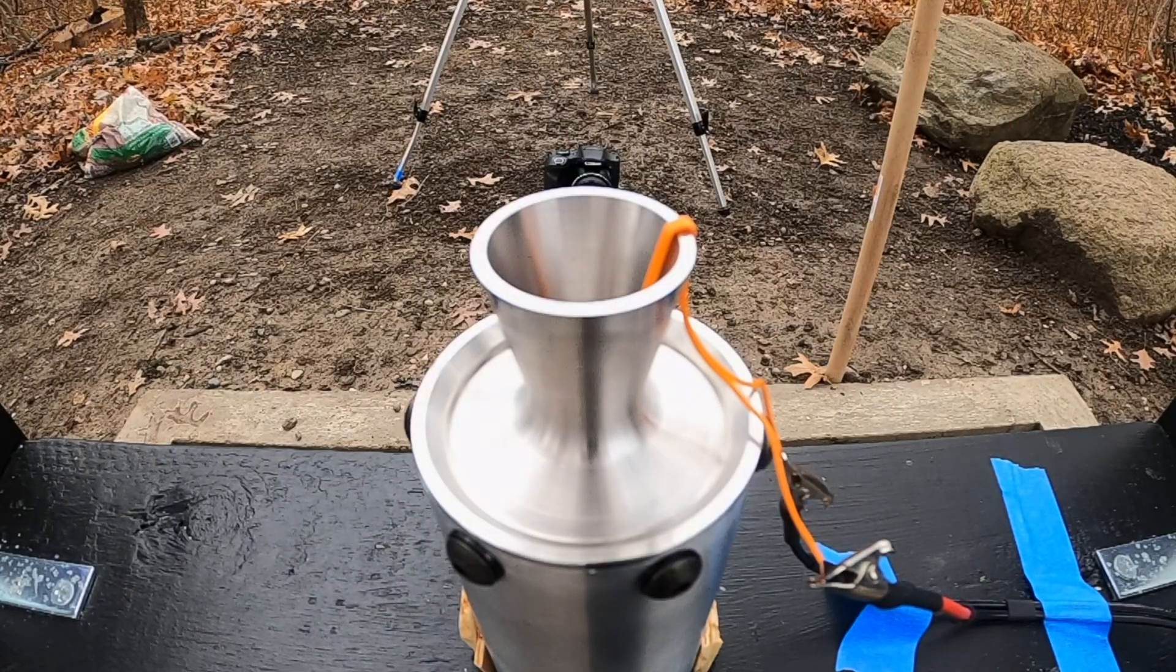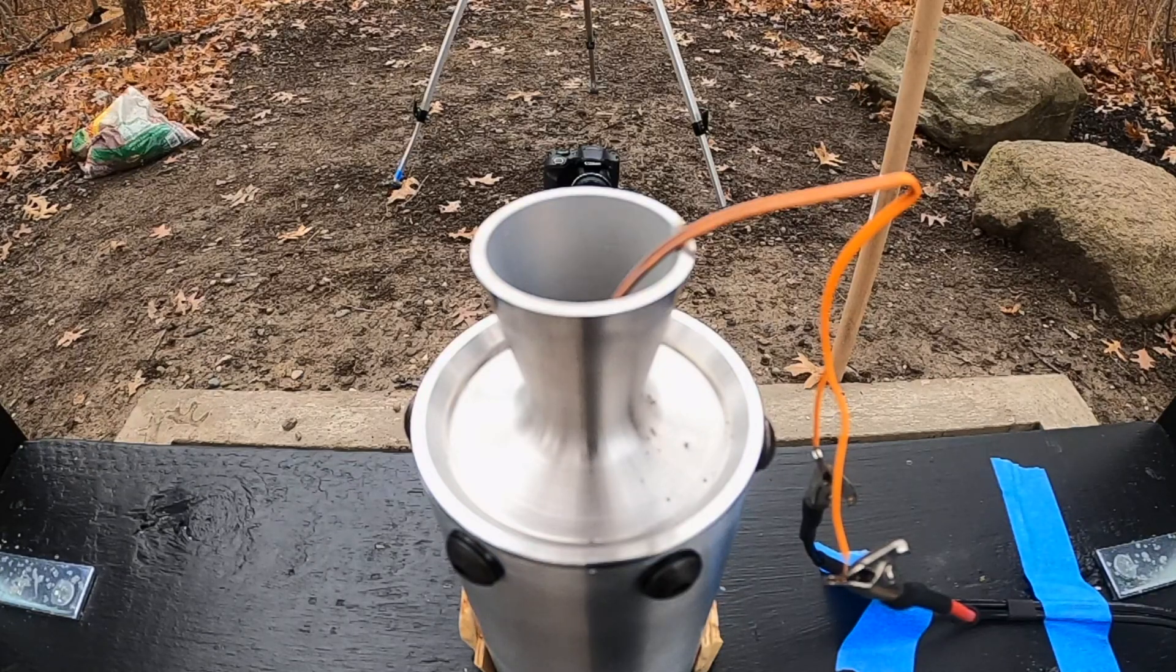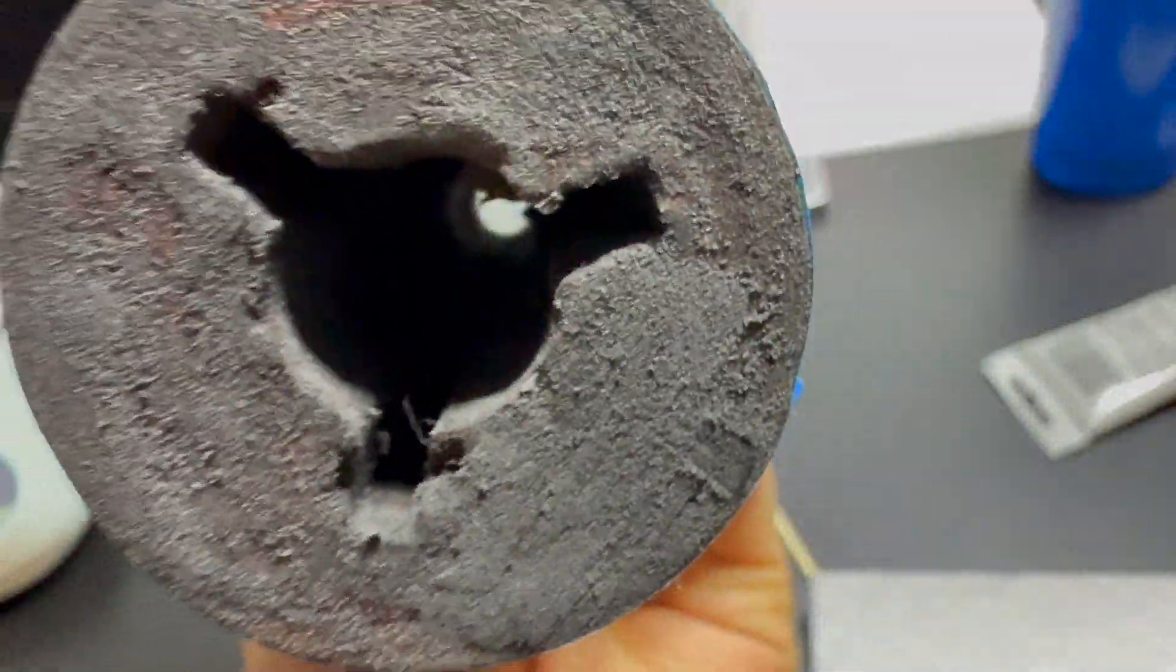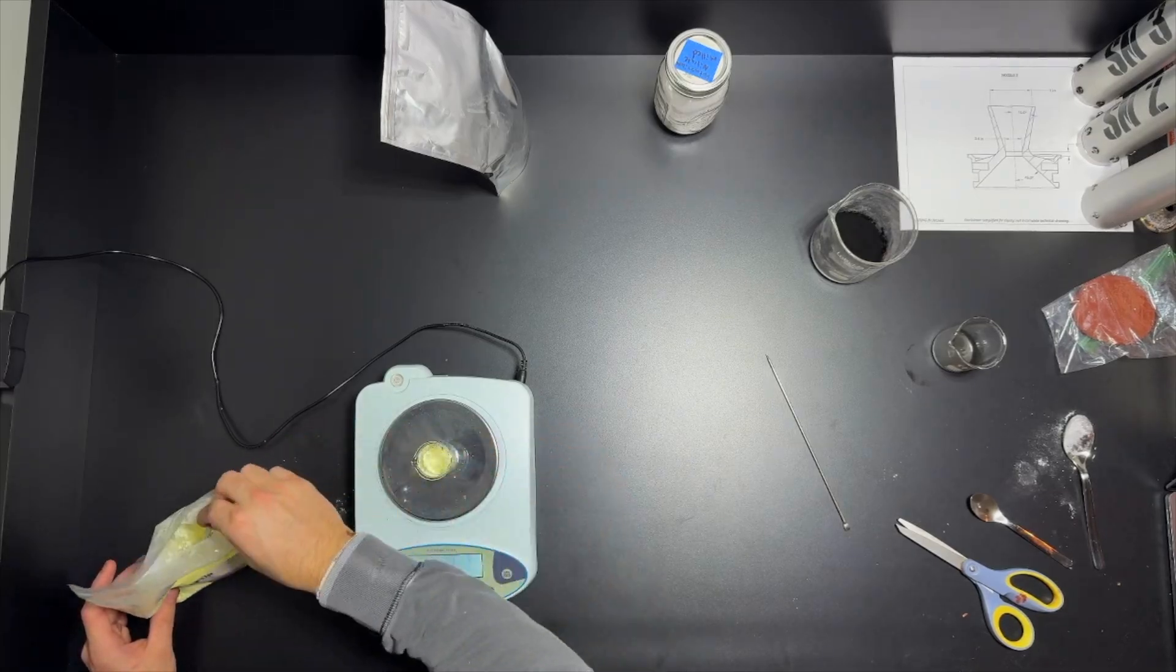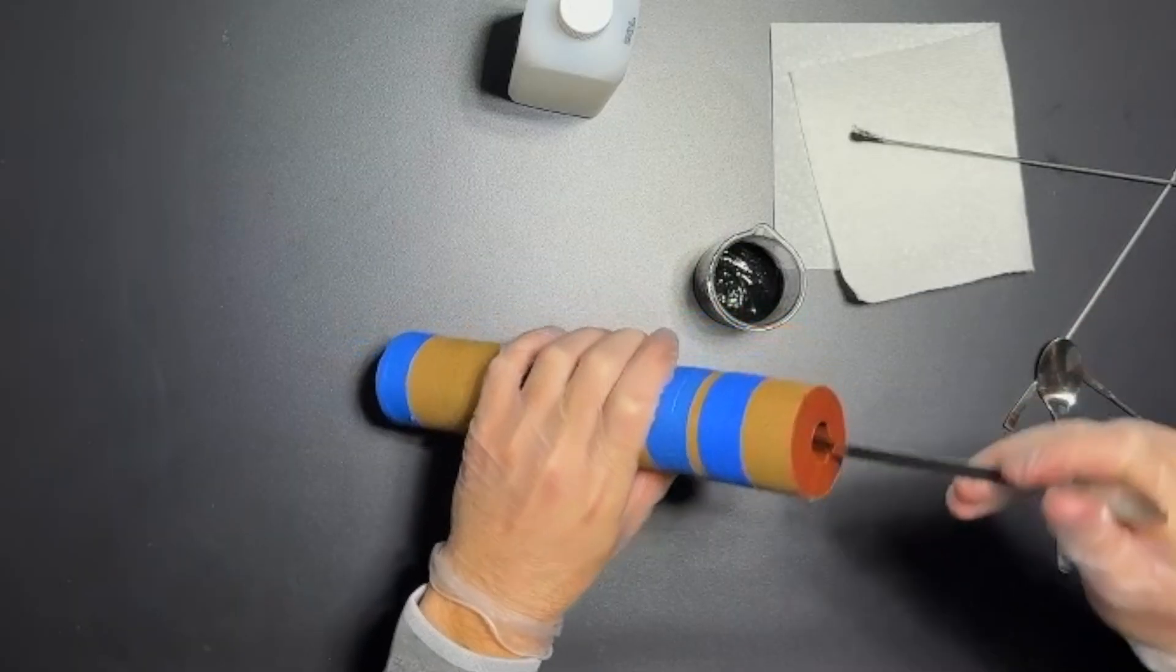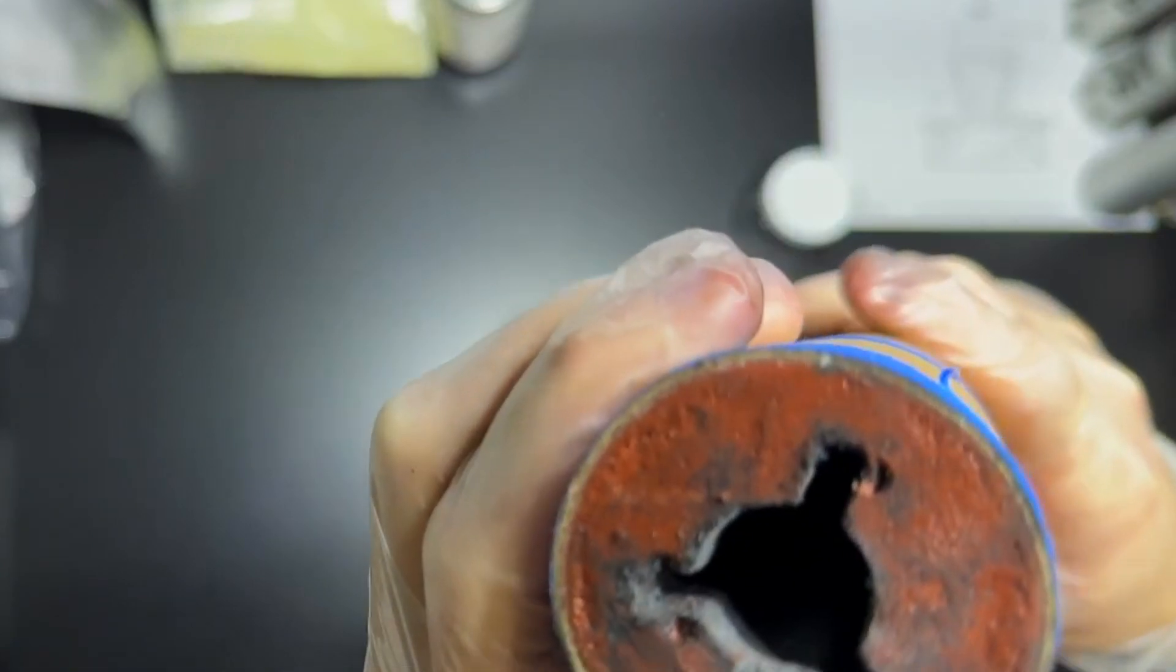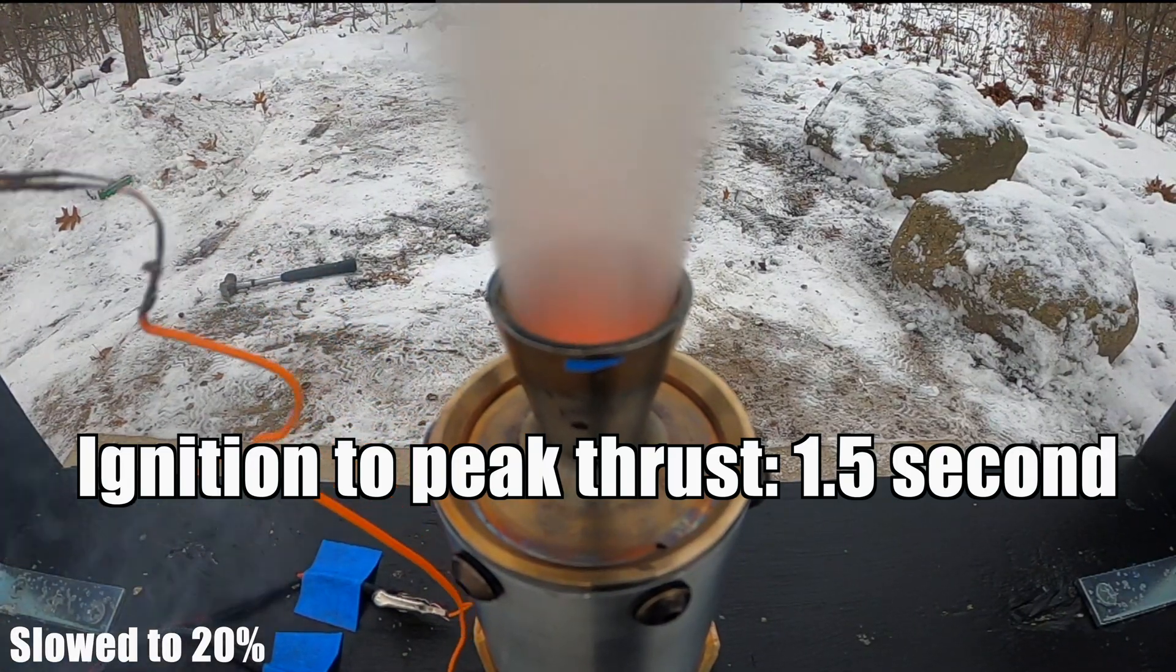For SN3, I started off with the same igniter, but after the first static fire, it was clear that it wasn't powerful enough. For SN3's second test, I went back to the simpler SN1's igniter, but then I added black powder inside the fuel grain to improve startup. To make it easier to apply the powder, I soaked it in acetone to make a paste. After I add the paste, the acetone will evaporate off, leaving a nice coat of powder. This decreases the ignition time to 1.5 seconds.